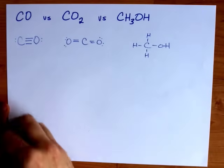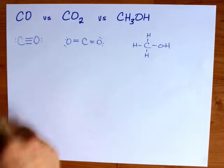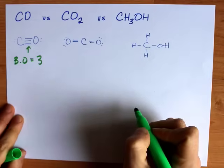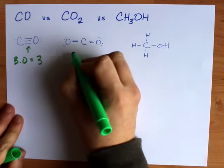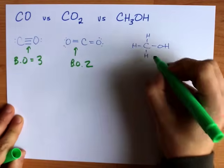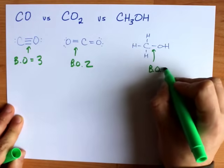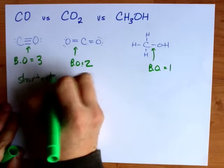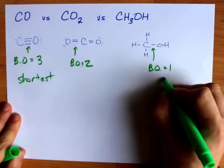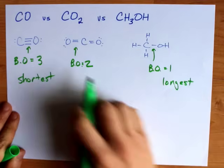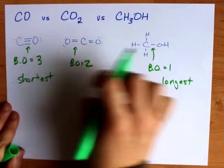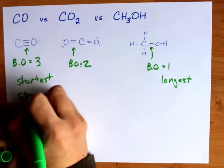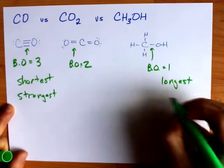Now I want to talk about the bond orders between carbon and oxygen. This is a triple bond, so the bond order is 3. This is a double bond, so the bond order is 2. And this is a single bond, so the bond order is 1. The triple bond here is the shortest bond of the 3, and the single bond is the longest bond of the 3. This bond length is somewhere in between. Of the three bonds, the triple is also the strongest, and the single is the weakest.